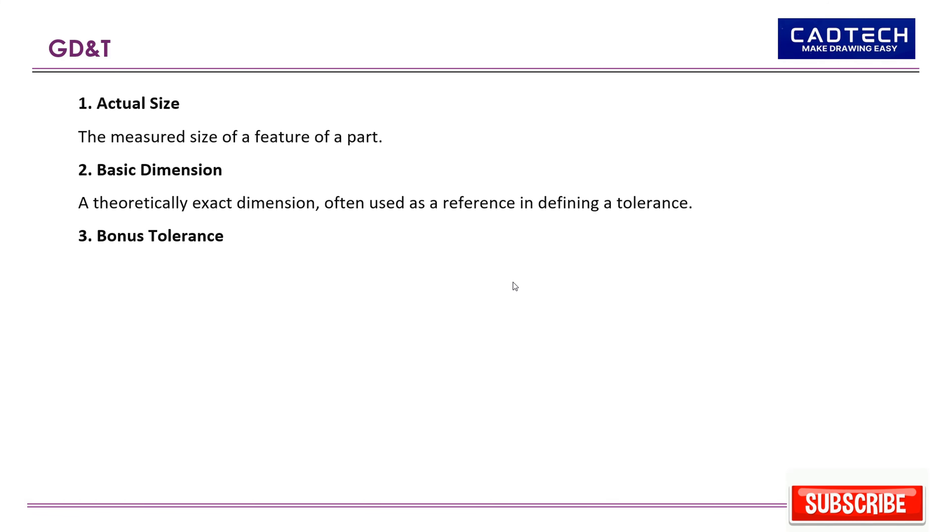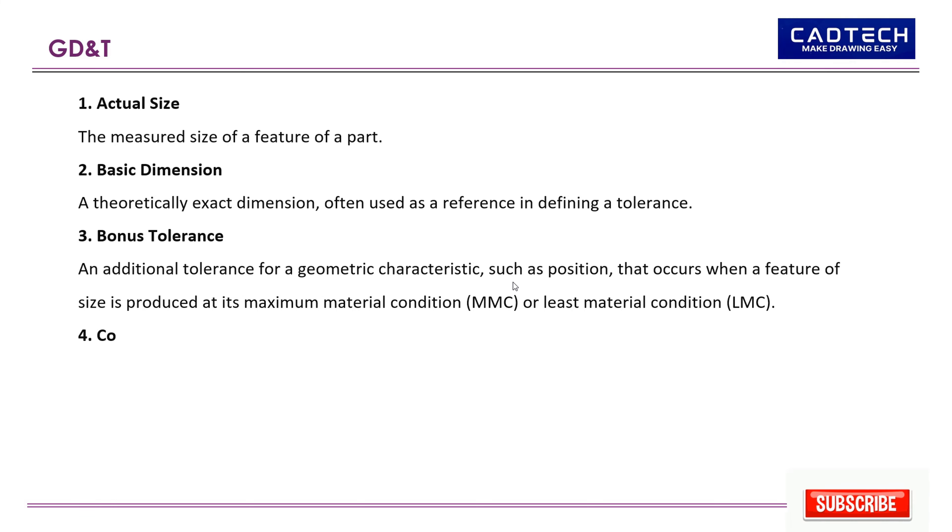3. Bonus tolerance: An additional tolerance for a geometric characteristic, such as position, that occurs when a feature of size is produced at its maximum material condition (MMC), or least material condition (LMC).